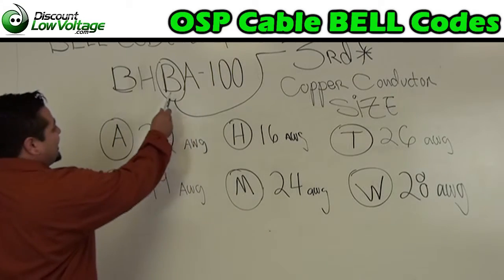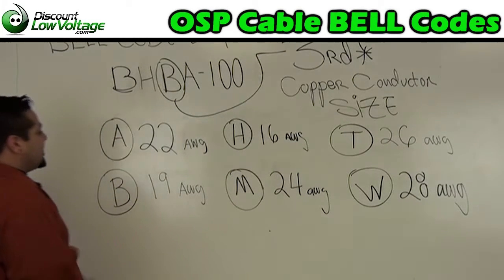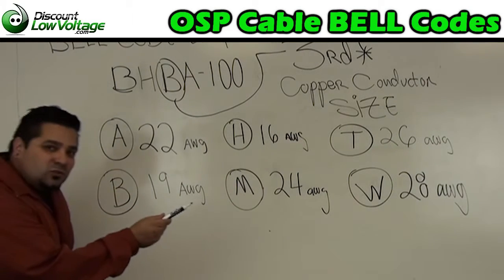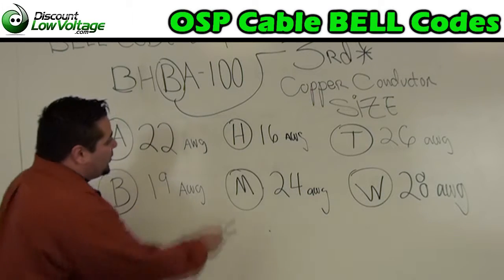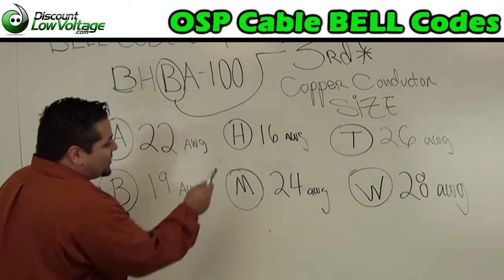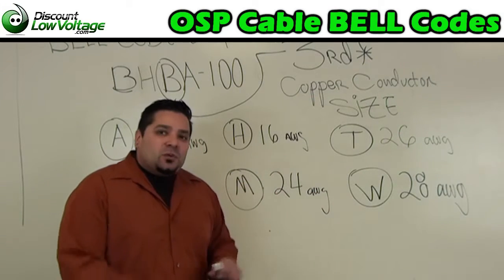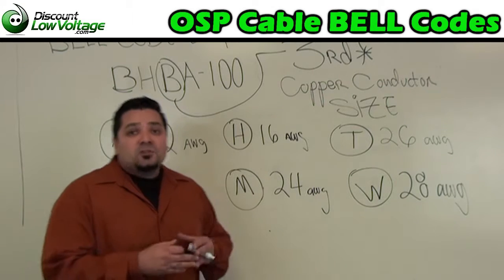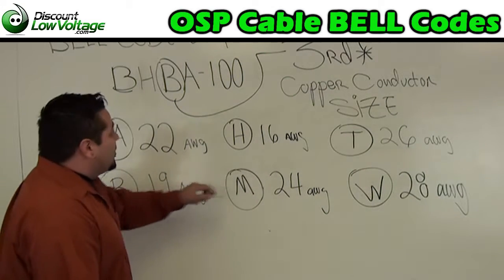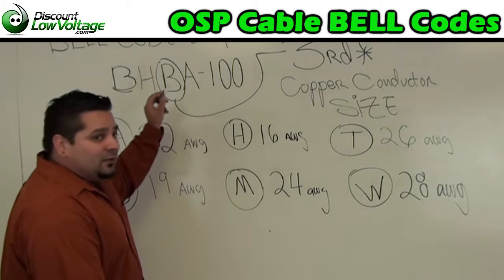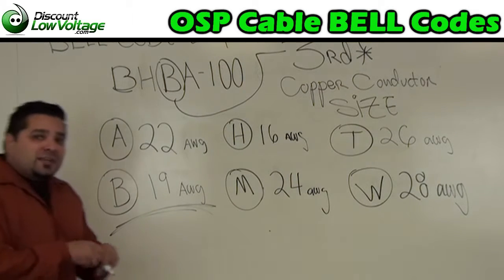The third designation stands for the copper conductor size. A is 22 gauge. B, 19 gauge. H, 16 gauge. M, 24 gauge. T, 26. W, 28. Personally, the most common size I've seen is your 24 gauge, the M. But in our code here, we have a B, which is telling us we have a 19 gauge cable.